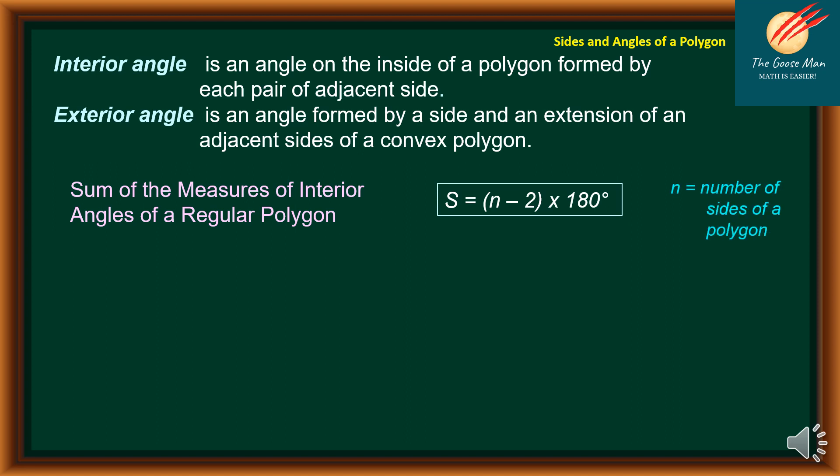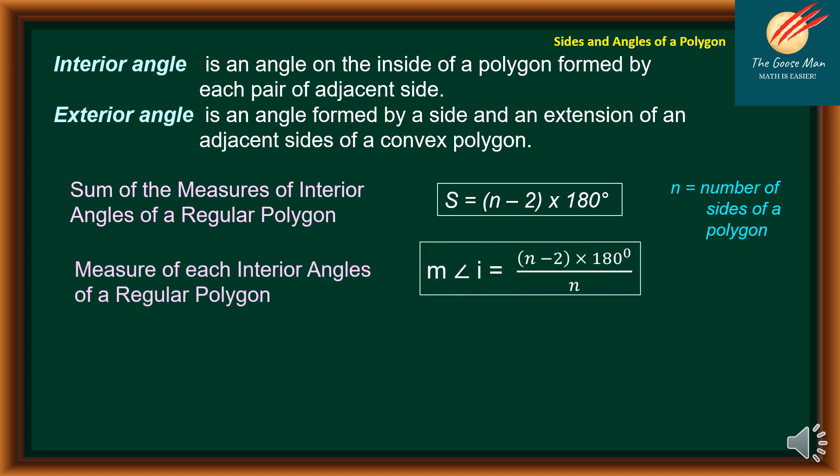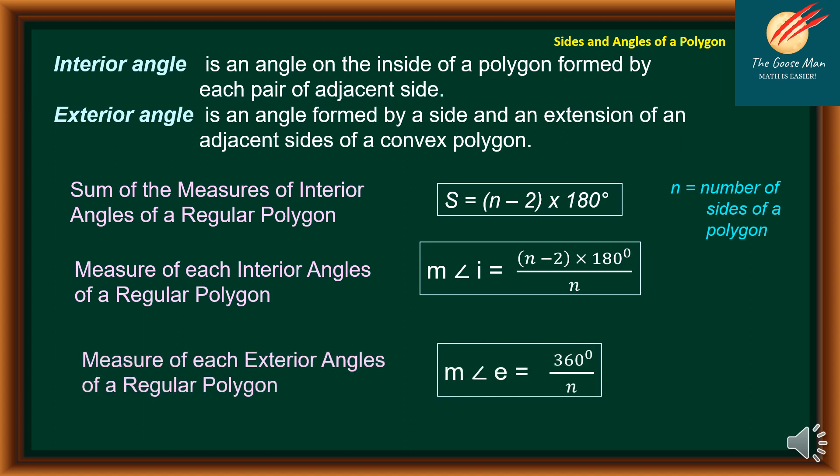N is equal to the number of sides of a polygon. The measure of each interior angle of a regular polygon is equal to (N − 2) × 180 divided by N. And the measure of each exterior angle of a regular polygon is equal to 360 degrees divided by N.